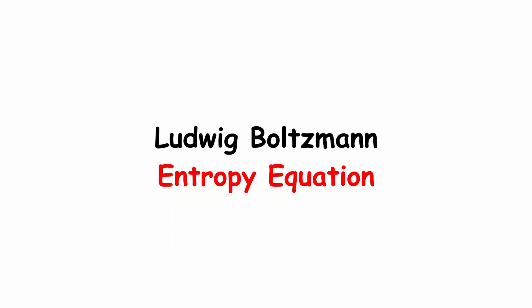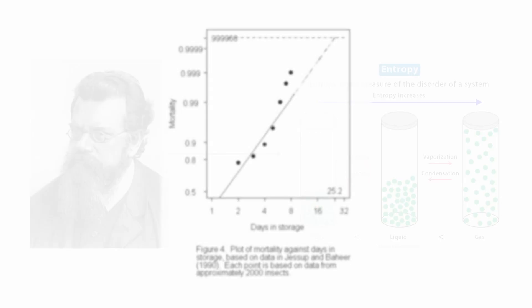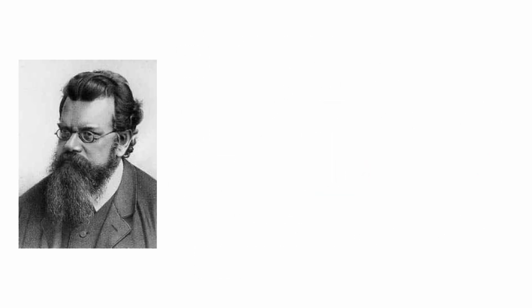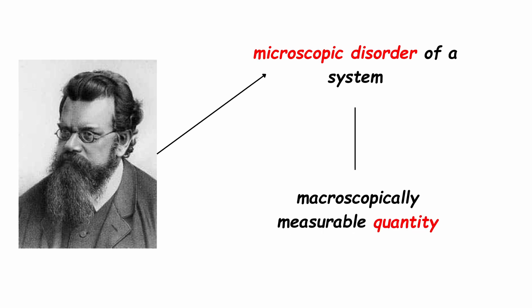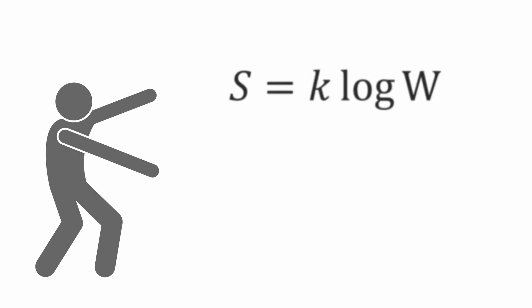Ludwig Boltzmann – Entropy Equation. At the end of the 19th century, Ludwig Boltzmann explored the concept of entropy from a statistical perspective. His formula relates the microscopic disorder of a system to a macroscopically measurable quantity – entropy. The famous Boltzmann equation is: s equals k times the logarithm of w.